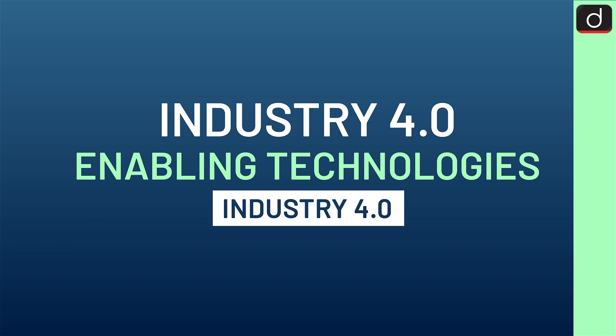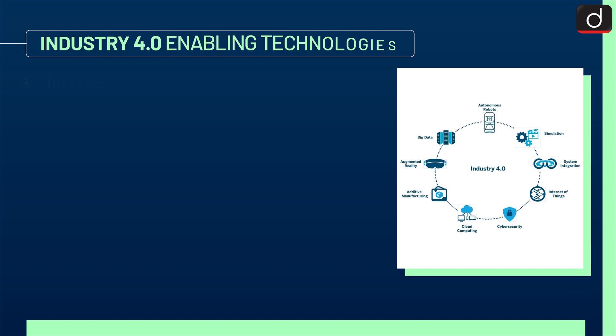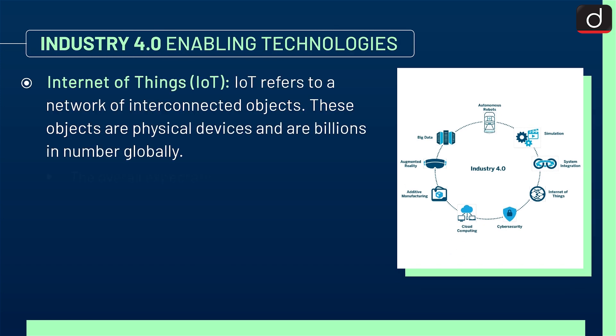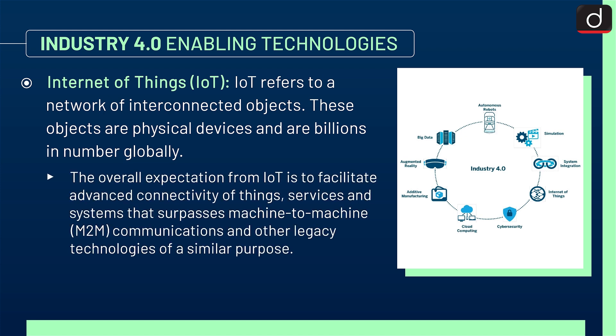Now moving on to Industry 4.0 enabling technologies. First is the Internet of Things (IoT). IoT refers to a network of interconnected objects — physical devices numbering in the billions globally. The overall expectation from IoT is to facilitate advanced connectivity of things, services, and systems that surpasses machine-to-machine (M2M) communications and other legacy technologies of a similar purpose.